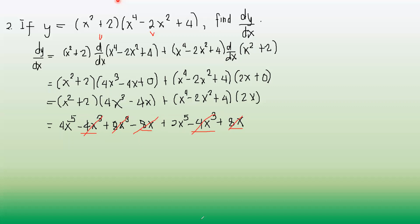So we have 6x raised to 5, giving us dy over dx equals 6x to the 5th. This is our derivative. Again, this example can also be simplified using algebra before differentiating.